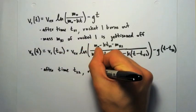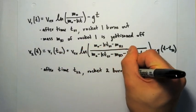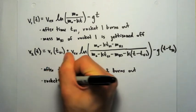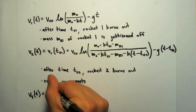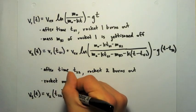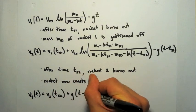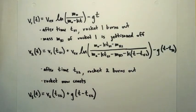So at the end of stage 2, at time Ts2, rocket 2 is all burnt out. So now the rocket is just going to coast, and so equation 3 for velocity is just a kinematic equation. We get the initial velocity plus g times t minus Ts2.